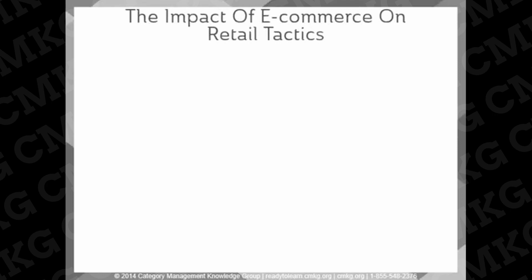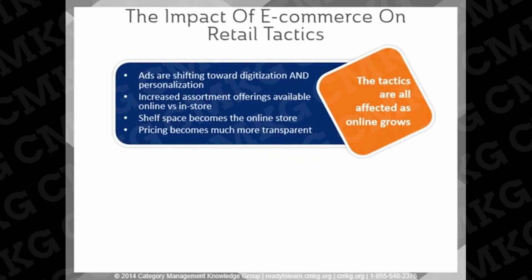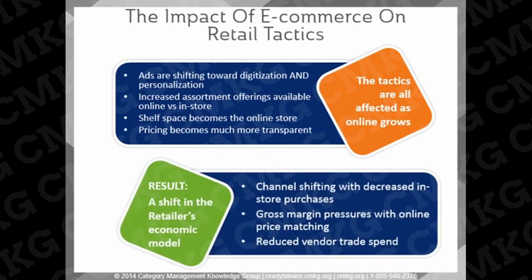Development in online sales has a direct impact on a retailer's tactics. For example, direct mail and newspaper circulars are playing a diminished role in retail marketing. Mass advertising will not disappear overnight, but its influence is certainly waning. There are increased assortment offerings in the online space, and shelf space becomes the online store. Pricing also becomes transparent. These trends will put considerable strain on the traditional retailer's economic model, with challenges to both the top and bottom lines.